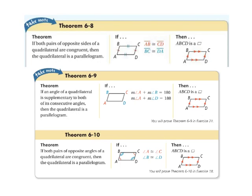Theorem 6-10 states if both pairs of opposite angles of a quadrilateral are congruent, then the quadrilateral is a parallelogram. So, if angle A is congruent to angle C and angle B is congruent to angle D, then the quadrilateral is a parallelogram.